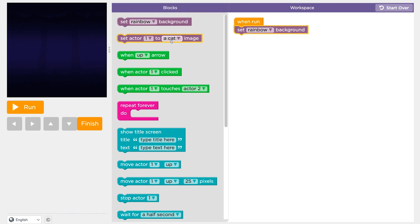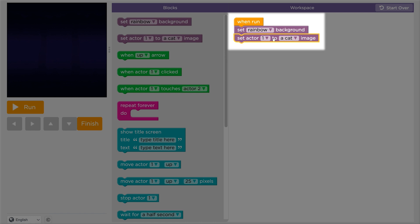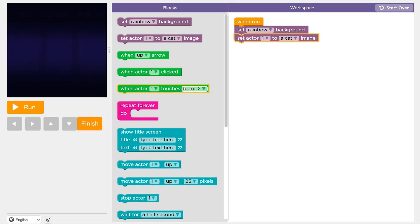You'll drag code blocks into your workspace to build programs. Code that you connect to the orange when run block will make things happen as soon as you press the run button.